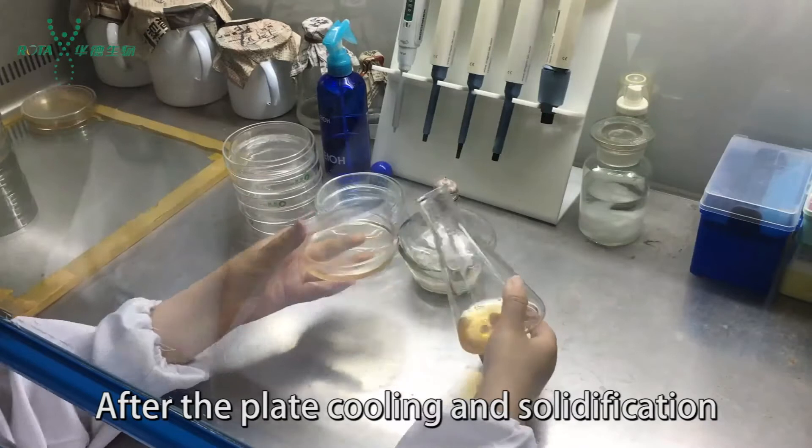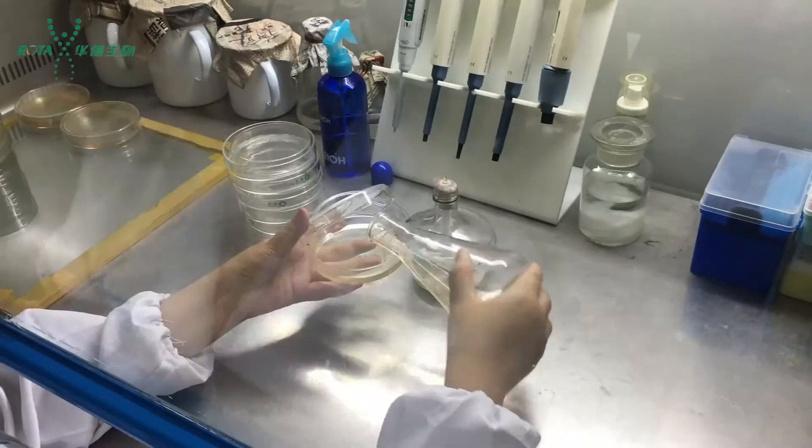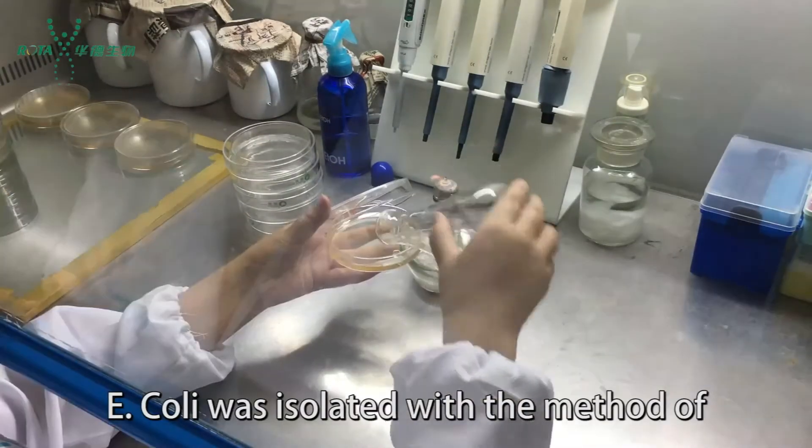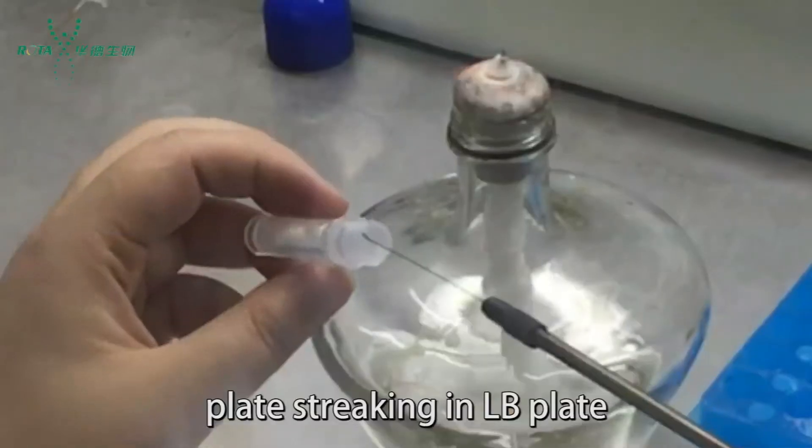After the plates cool and solidify, E. coli is isolated using the plate streaking method on LB plates.